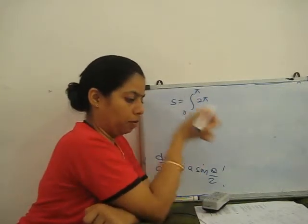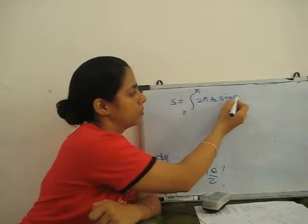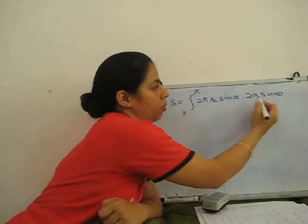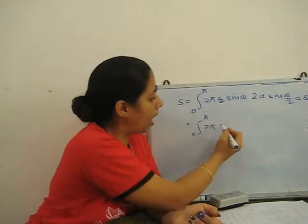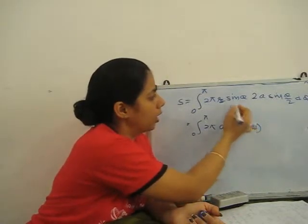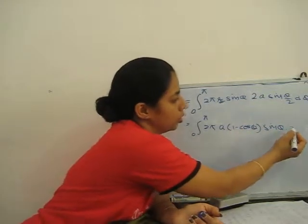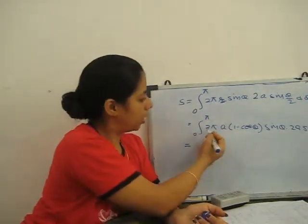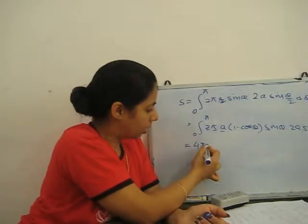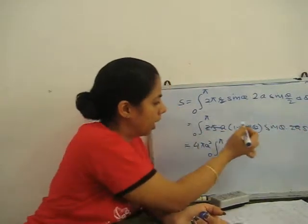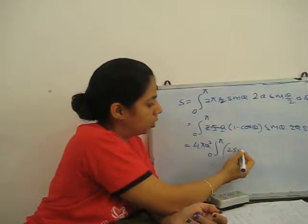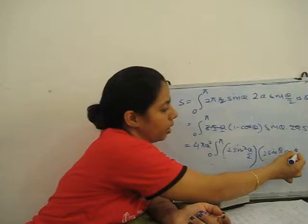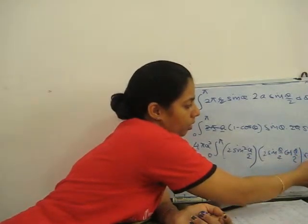Merging constants and taking outside: 2π · A · 2A = 4πA². The integral from 0 to π becomes: (1 - cosθ) written as 2sin²(θ/2), multiplied by sin(θ/2) · 2sin(θ/2)cos(θ/2) · sin(θ/2) dθ. Now just integrate it: cos(θ/2) dθ.